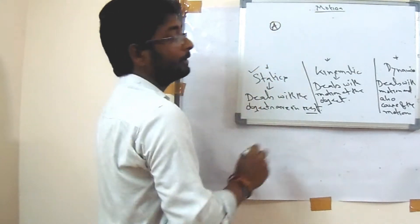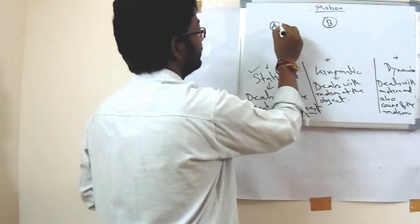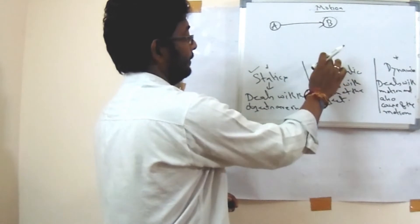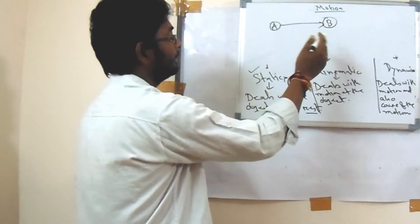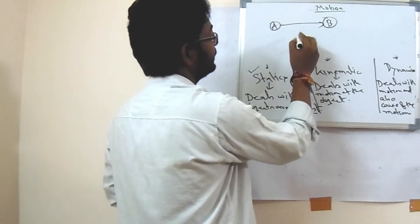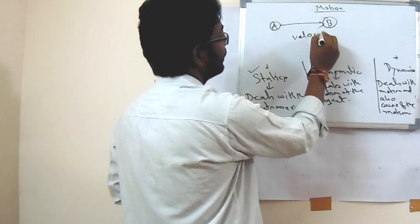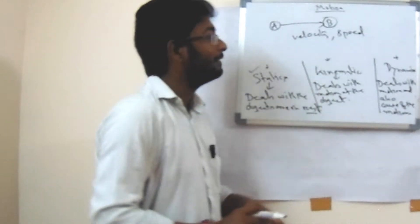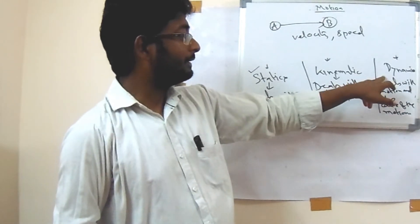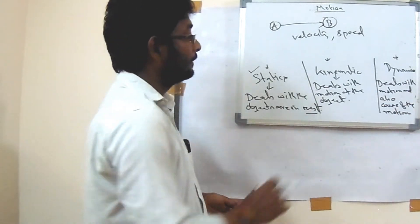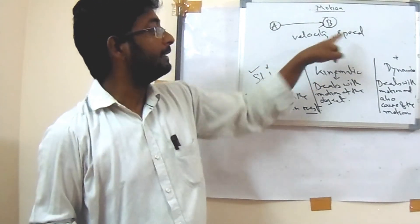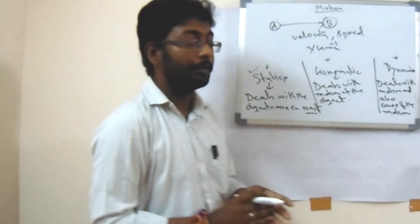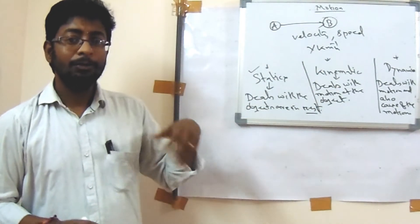For example, suppose one object moves from point A to point B. If we consider kinematics, we only study that motion. But dynamics means the cause of the motion — why is it moving at x kilometers per hour? What is the force related to this?